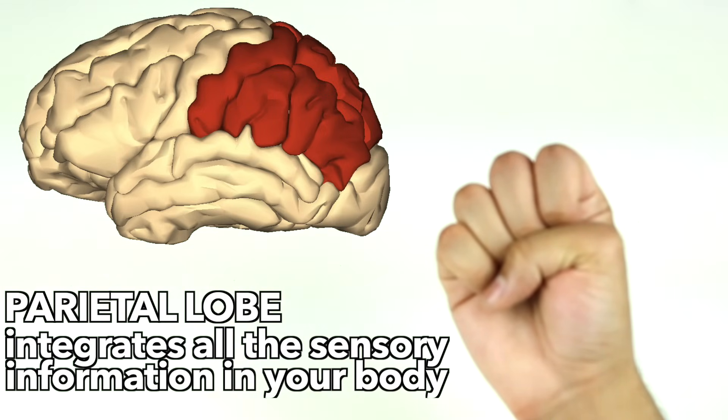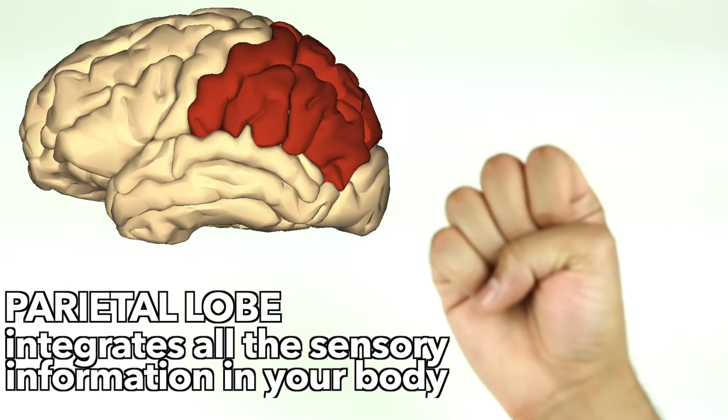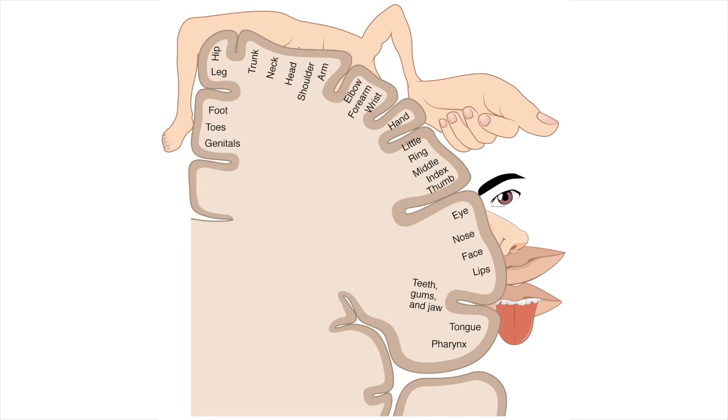But your brain doesn't prioritize each part of your body equally. Take a look at this homunculus map of the primary motor cortex of the brain. You'll notice that the brain prioritizes information from your hands and face.